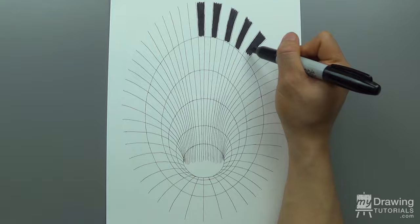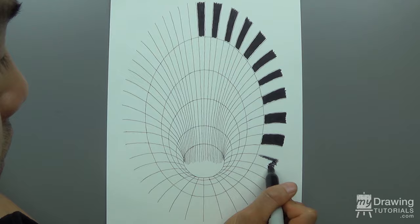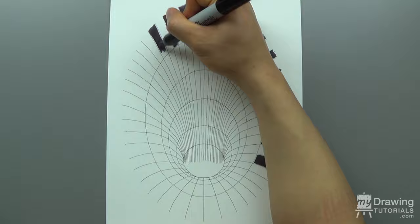Now we'll use a sharpie marker to fill in the outer circle using an alternating pattern. This is why it's important to have an even number of stripes. If the stripes were odd, we would throw the pattern out of sync.